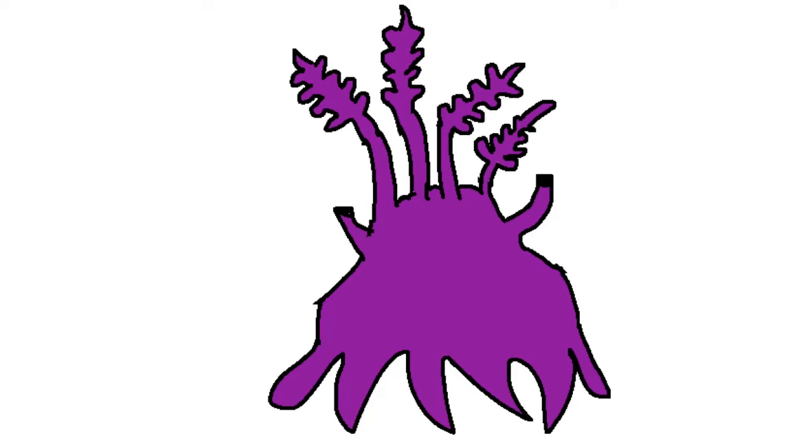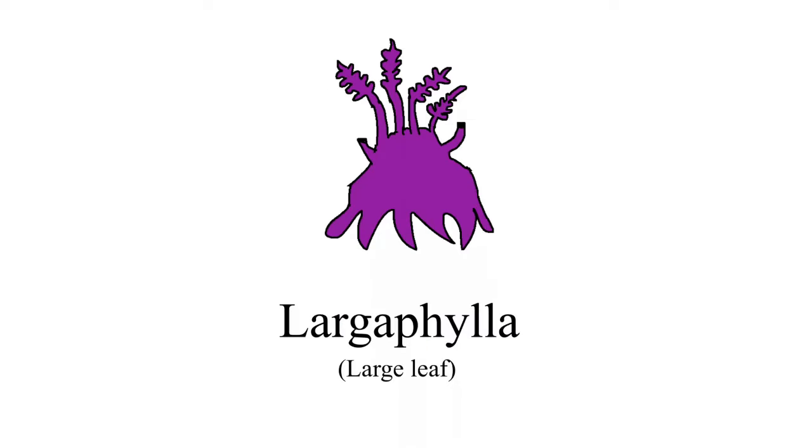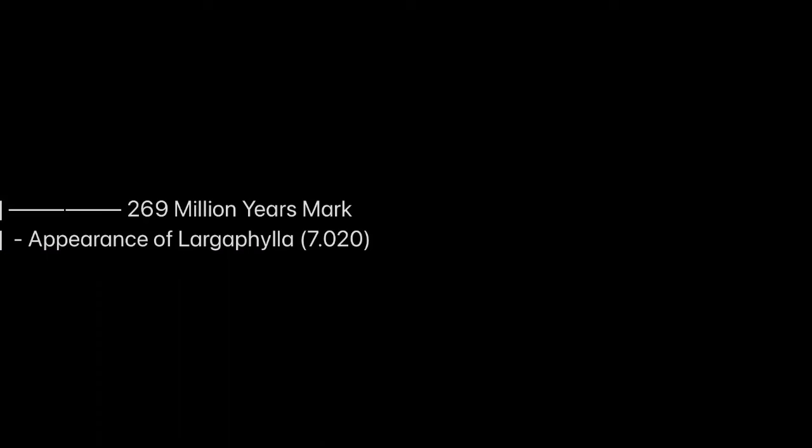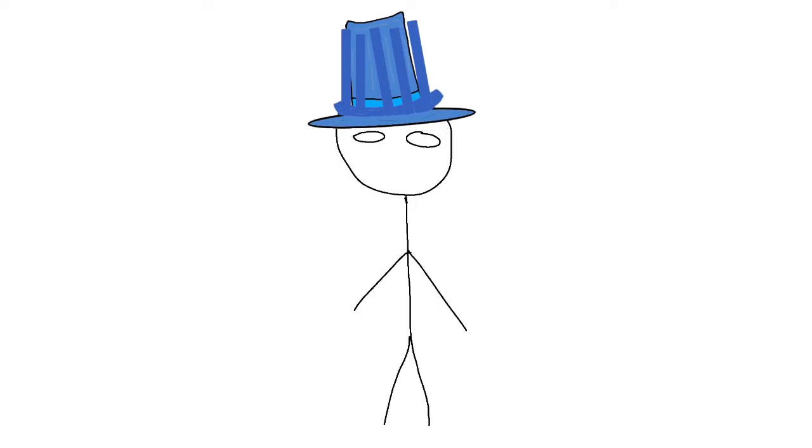which will carry them to other places, fertilizing each other along the way and creating new plant specimens in other areas of the rivers. I'll call these Cryptophylla descendants Largophylla, and they'll appear 7.020 million years into the timeline.